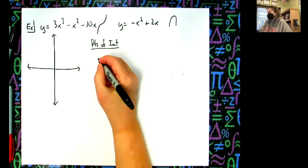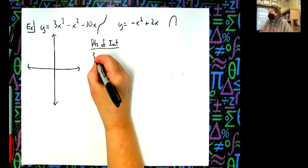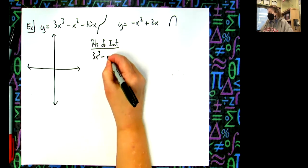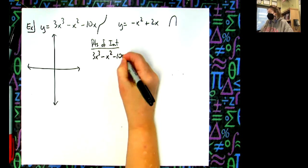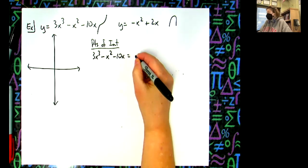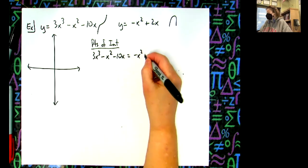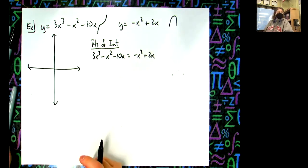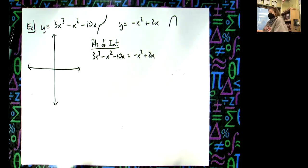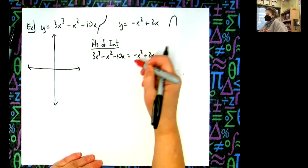This might help us a little bit with our sketch. So 3x³ - x² - 10x equals -x² + 2x. And looks like my negative x squareds are going to fall out.